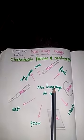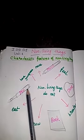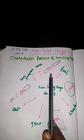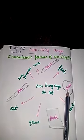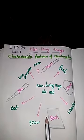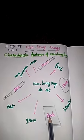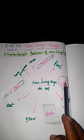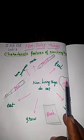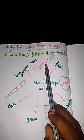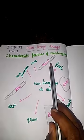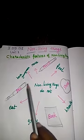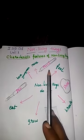Non-living things. Students, here we see what is this? This is a pen. Here, pencil. This is stone. This is book. B-O-O-K, book. S-T-O-N-E, stone. P-E-N-C-I-L, pencil. P-E-N, pen. These are the examples of non-living things.